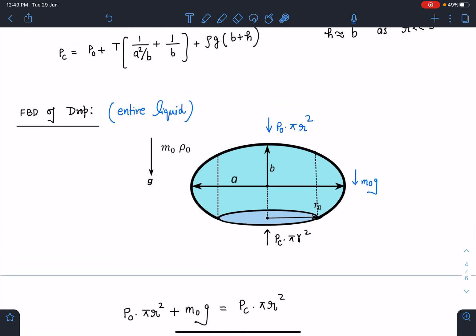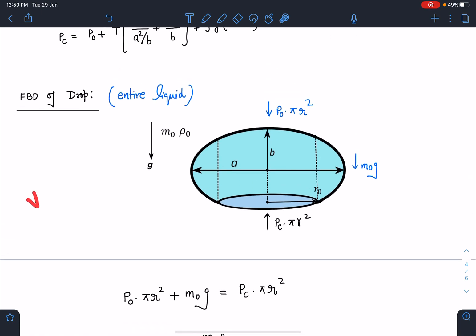There is one more thing possible. You can use the volume formula for ellipsoid which is 4/3πabc. Since two radii are b, the volume is 4/3πab². So m₀ equals ρ₀ times 4/3πab². You can use this result as well. That solution is also correct.